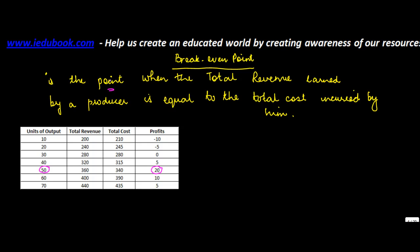Break-even point is the point — and when I say point, as discussed earlier, point means the level of output. So the break-even point, or the level of output at which a break-even point occurs, is the point when the total revenue (TR) earned by a producer is equal to the total cost (TC) incurred by him.